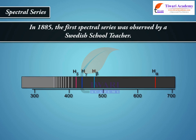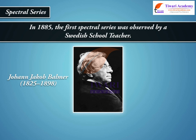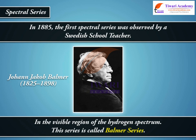Spectral series. In 1885, the first spectral series was observed by a Swedish school teacher, Johan Jacob Balmer (1825–1898), in the visible region of the hydrogen spectrum. This series is called the Balmer series.